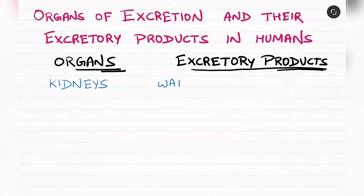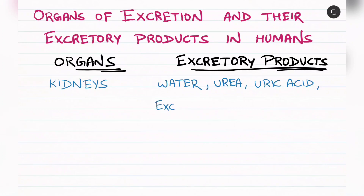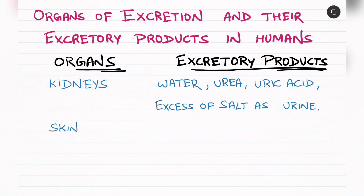First of all, the kidney. The kidney excretes water, urea, uric acid, and excess salts in the form of urine.